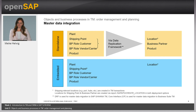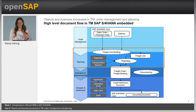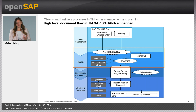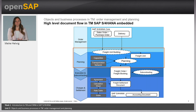This data is also mandatory. You need this data to integrate a sales order or delivery to TM. This is all about the order management part. Let's talk about the planning part, which is really the heart of TM — all about planning, finding the best utilization, best truck, best carrier, all this kind of things. And here we have something special which you don't know from eLeTra, which is the freight unit.